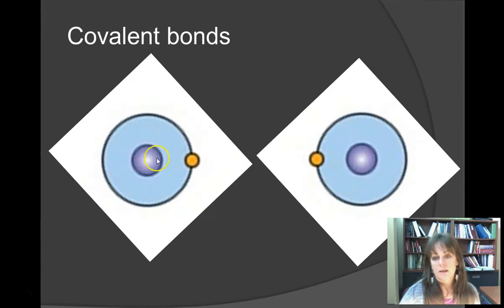Let's look at these two individual atoms. This is the nucleus here, and then it shows one electron. This one over here has one electron.